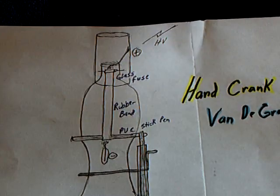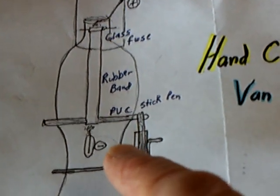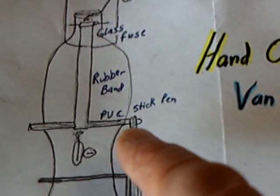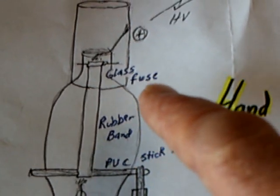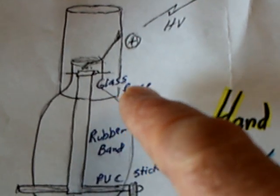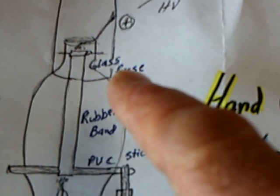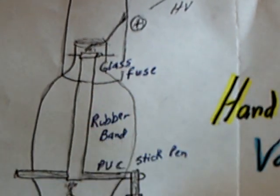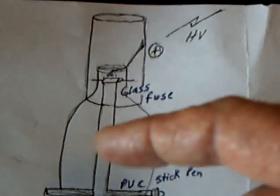And this is what it looks like inside. There's a rubber band belt that goes around a PVC stick pin, just a writing pin tube. Up at the top is the typical glass fuse where you take off the end caps of the fuse and use the glass with a paper clip through it and a rubber band. The crank simply moves the charge from top to bottom.